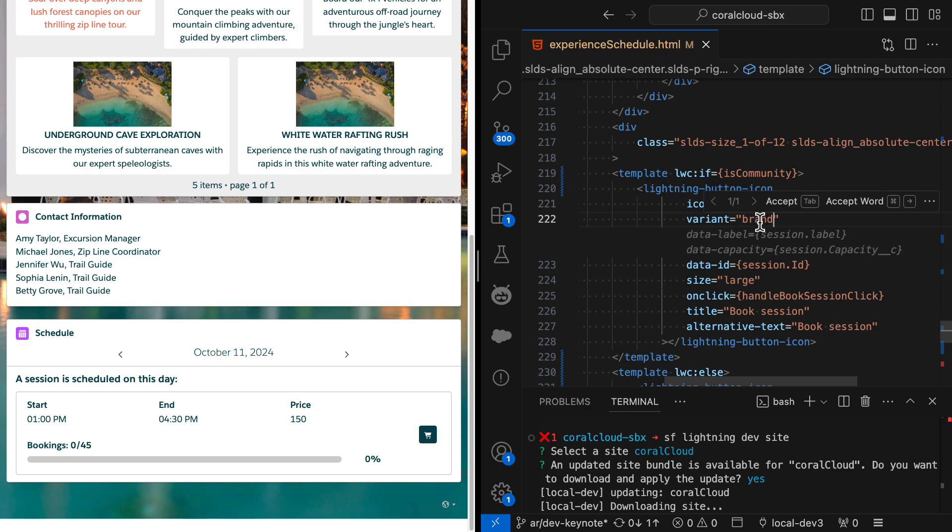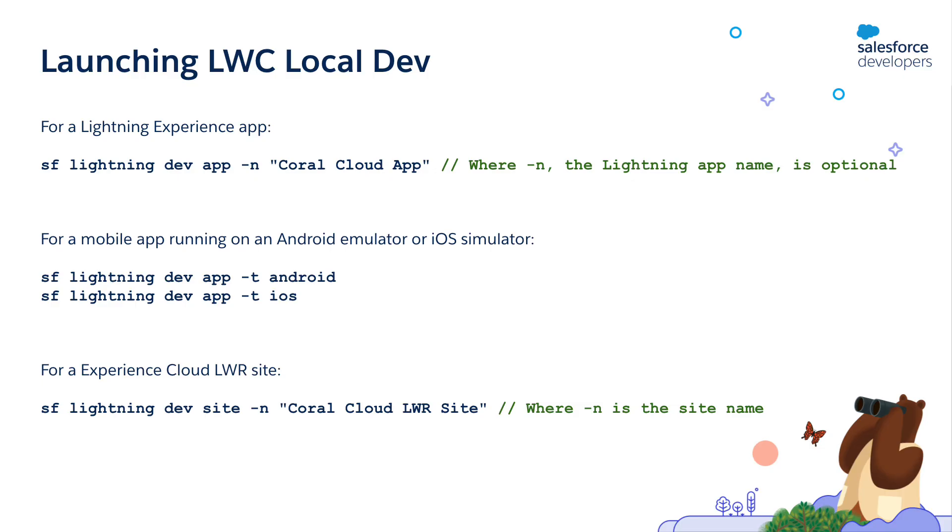There it is. As a reminder, these are the commands that you need to run to launch local dev on the different experiences. In this video, you have learned about the LWC local development beta, which allows you to preview your code changes in real time without having to deploy them and without having to refresh. This is a game changer for Salesforce developers, as the time that you save increments exponentially with the number of code changes you perform.